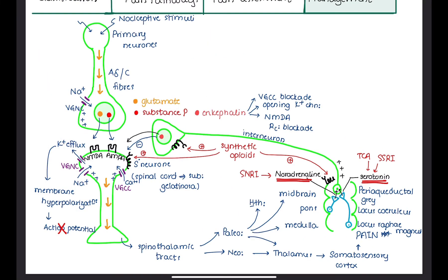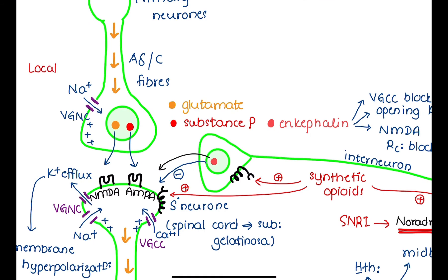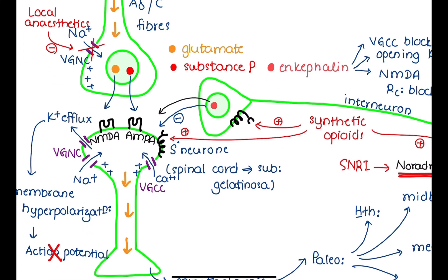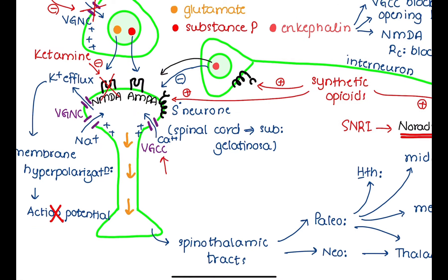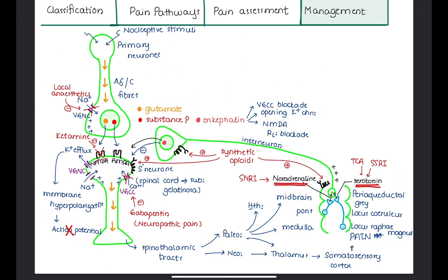Local anesthetics like lignocaine can reduce pain by blocking voltage-gated sodium channels. General anesthetics like ketamine reduce pain by blocking NMDA receptors. Gabapentin reduces pain by blocking voltage-gated calcium channels, and it is effective for treating neuropathic pain, where voltage-gated calcium channels are upregulated. These are the medications used for pain relief.